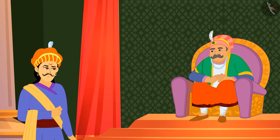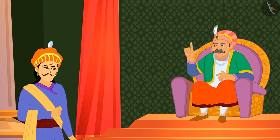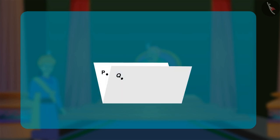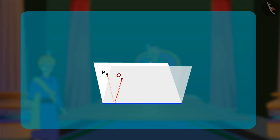Akbar asked Birbal how he could be so sure that the crease formed is a straight line. Birbal explained that from any point on the crease, the distances to P and to Q are equal. Mathematically, the point P is called the image of point Q in a reflection in the line formed by the crease. Conversely, Q is the image of P in the same reflection, and hence the crease is definitely a straight line.